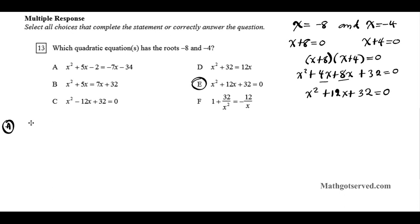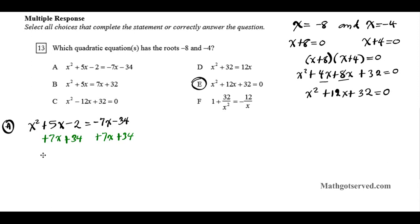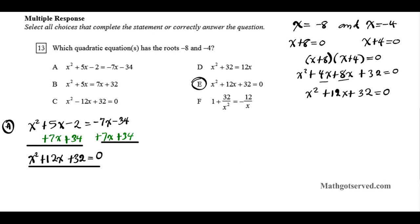Option A gives us x squared plus 5x minus 2 equals negative 7x minus 34. To put this in standard form, we add 7x to both sides and add 34 to both sides. Combining terms, we get x squared plus 12x plus 32 equals 0. This clearly matches our target equation, so option A is a match.